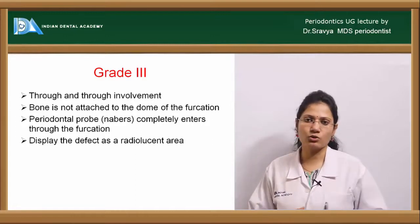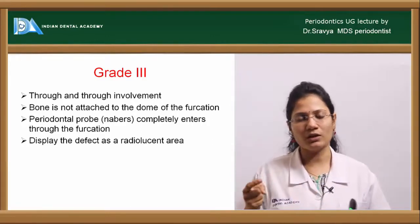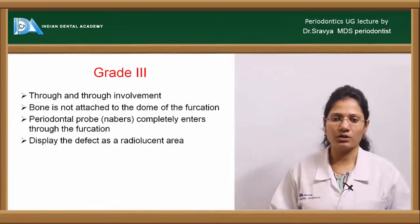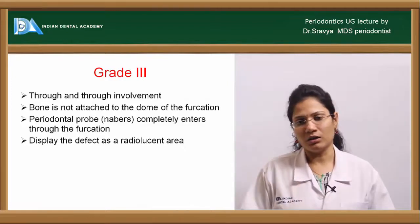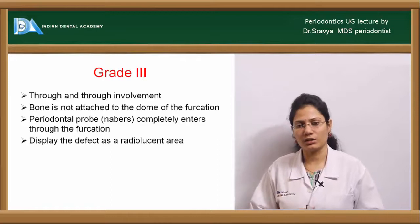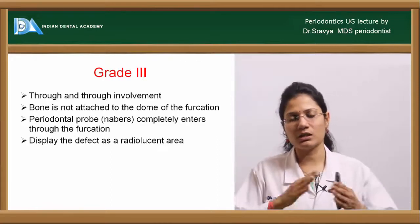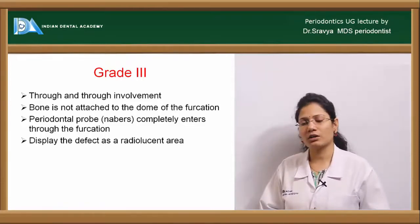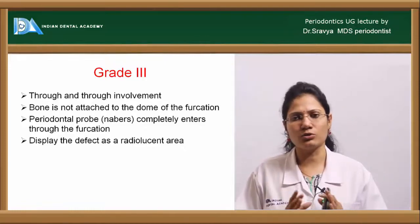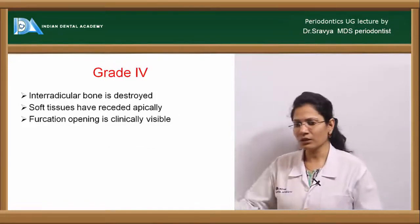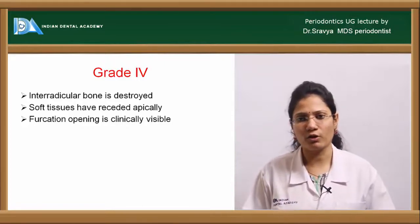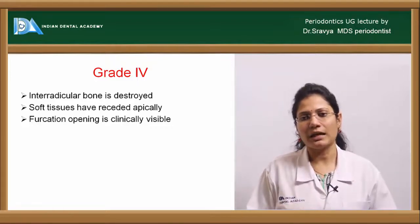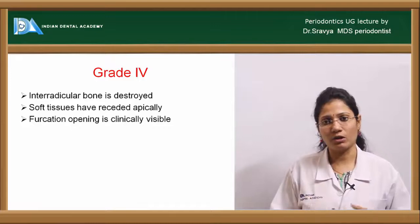Grade three is a through-and-through furcation where the probe passes from one end to the other completely, meaning the entire interradicular area is devoid of bone. However, the soft tissue or gingiva still covers the furcation entrances, and radiographically a typical radiolucency is seen. Grade four is also through-and-through but the gingiva has receded apically, making the furcation involvement clinically visible.